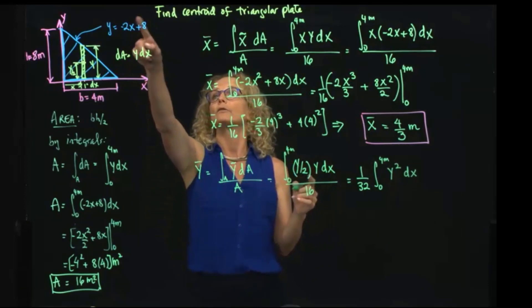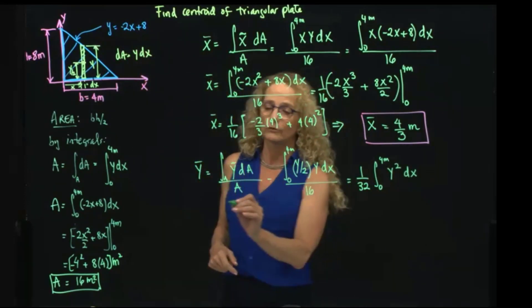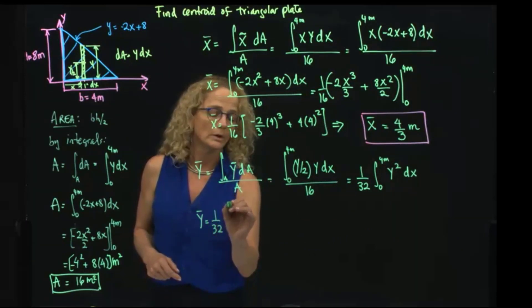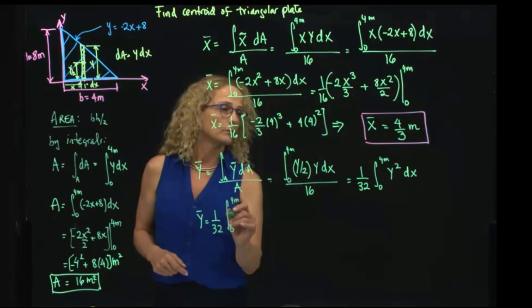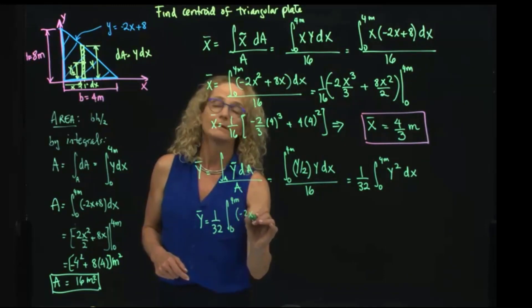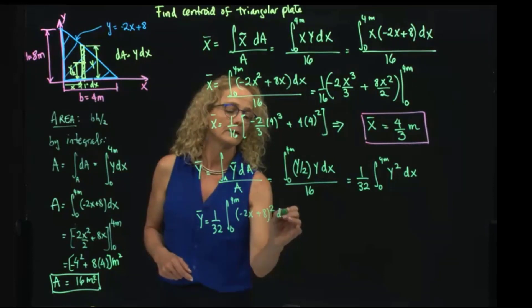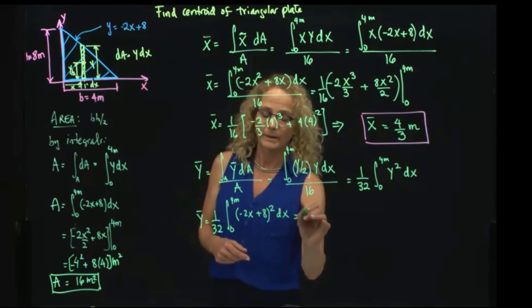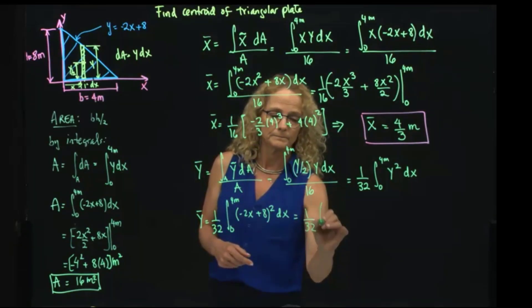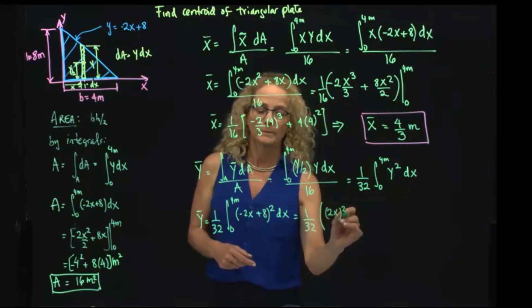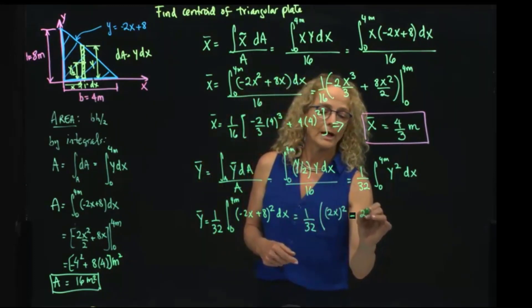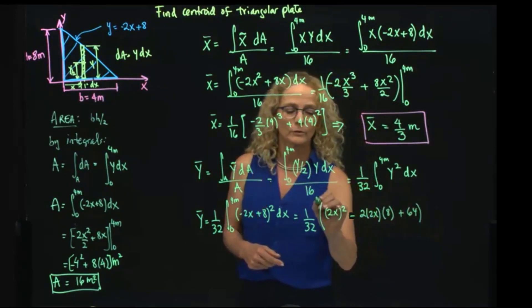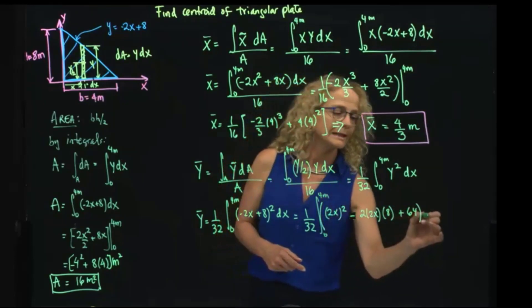Y squared, we have to square this polynomial, so that gives me 1 over 32, the integral from 0 to 4 meters of negative 2X plus 8 squared dX. Let's square that binomial, and that gives me 4X squared minus 32X plus 64. I have to integrate that from 0 to 4.